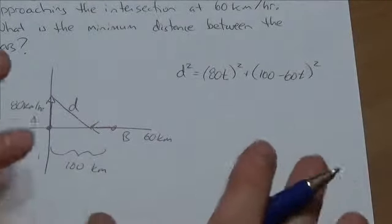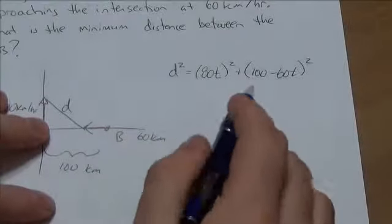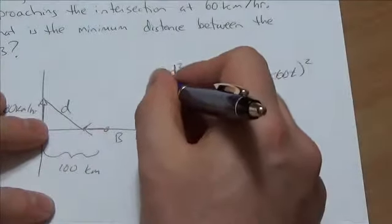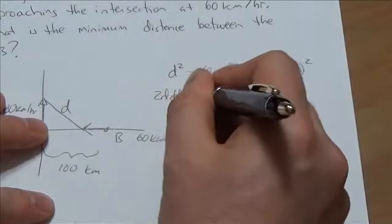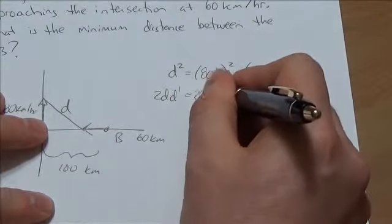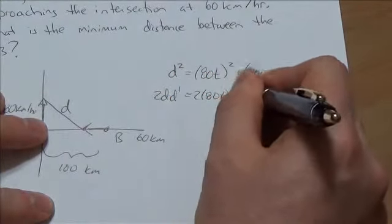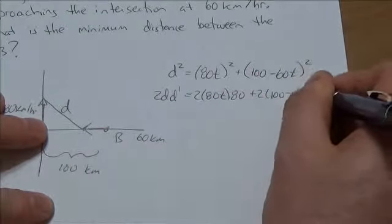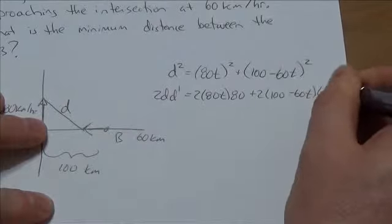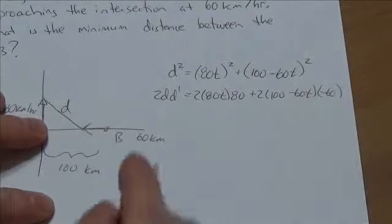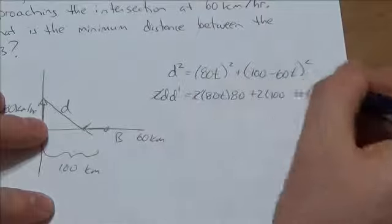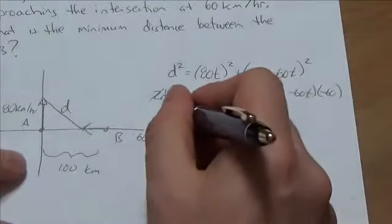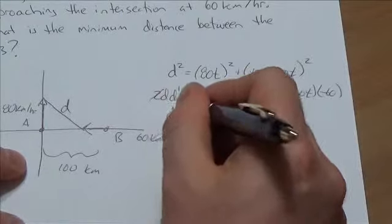But actually what I'm going to do here is take the derivative implicitly. So it'll be 2D·D' equals 2(80t)(80) plus 2(100 - 60t)(-60). Notice that the 2s all cancel, and what I'm going to do here is isolate the D'.